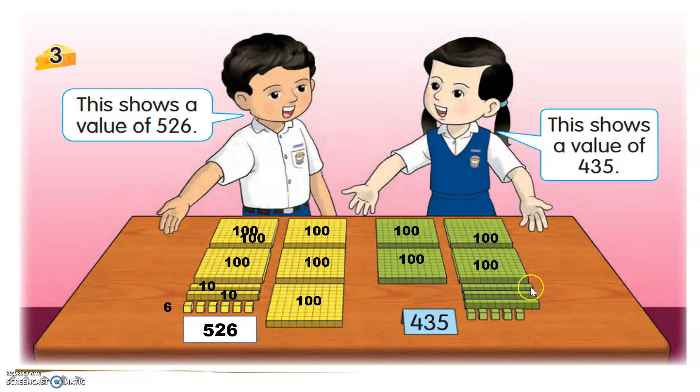The vertical one? 10, 10, and 10. The small cubes here, 1, 2, 3, 4, 5. So let's read together. 100, 200, 300, 400, 400, and 10, 20, 30, 5. So 435.